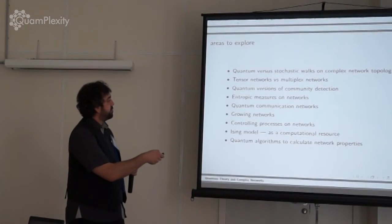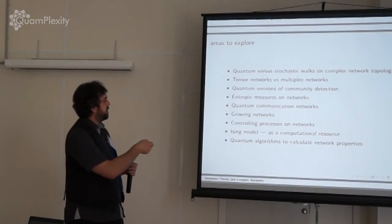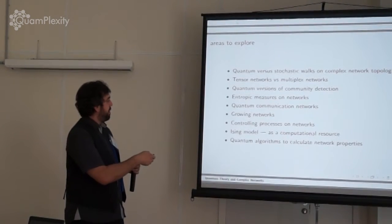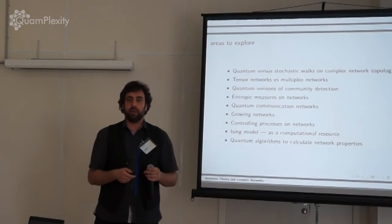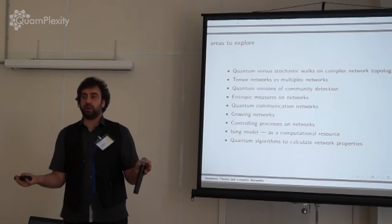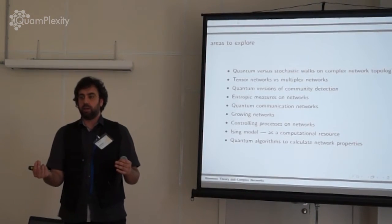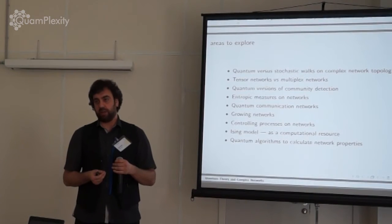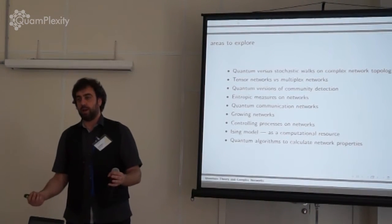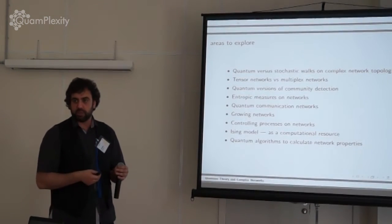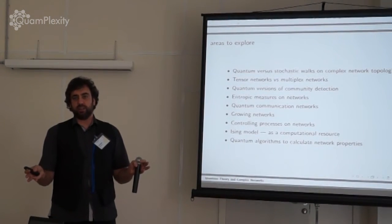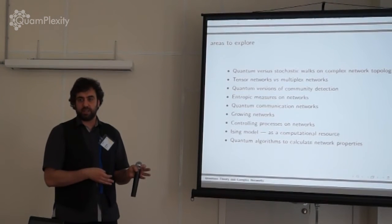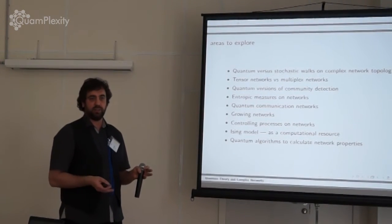So quantum versus stochastic walks on complex network topologies. These are the different areas that people have explored when they're looking to merge these two things. Tensor networks versus multiplex networks I've already mentioned. Quantum versions of community detection is an interesting one. What happens if you have, let's say, a biological process that has some quantum coherence in it? Can you apply your community detection algorithms to find out where those particles are localized and why? This is something that we worked on. I personally decided I don't want to ever work on community detection again because the best thing you're going to do is an axiomatic framework. It's never going to be well-defined what a community is, but I tried it.